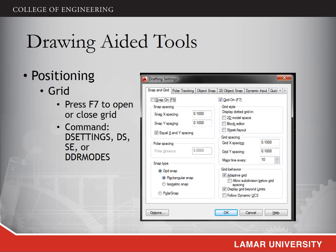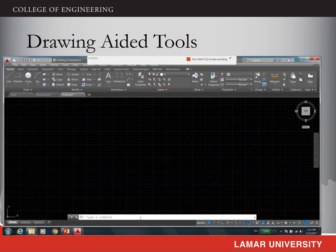Those are the operations of layers. AutoCAD also provides some useful drawing tools to help users complete the design efficiently. The first is the grid in the drawing area. You can press F7 to open and close the grid. Also, the spacing of the grid can be modified in the property window. You can type 'dsettings', 'ds', 'se', or 'ddrmodes' to activate the property window.